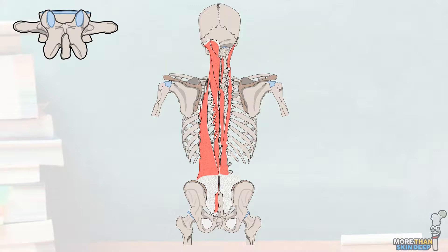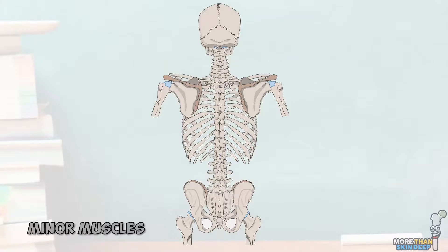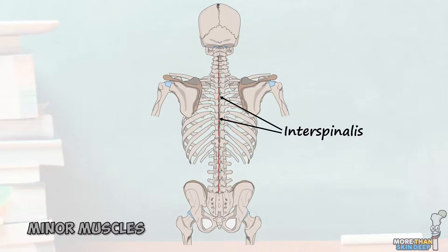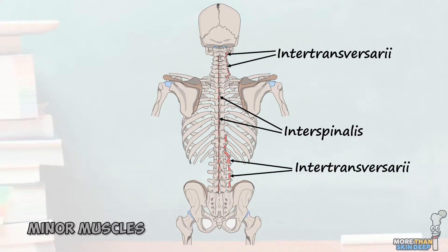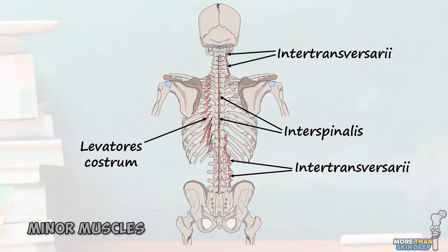Let's finish by covering the last very small muscles of the back. Between the spinous processes of almost every vertebra is a small vertically oriented muscle known as an interspinalis. These muscles are best developed in the cervical and lumbar regions and act primarily to stabilise the vertebral column. Then we have the really similar intertransversarii muscles, which go between the transverse processes, mainly of the cervical and lumbar vertebrae, and stabilise the spine. And lastly, we have the levatores costarum, which originate from the transverse processes of C7 to T11 and insert into the superior borders of the ribs. These numerous small muscles help to lift the ribs at their costovertebral joints.